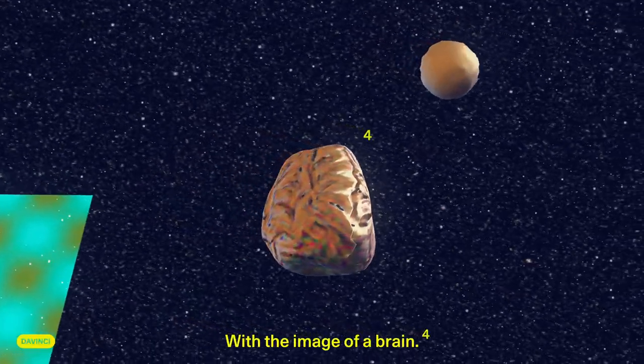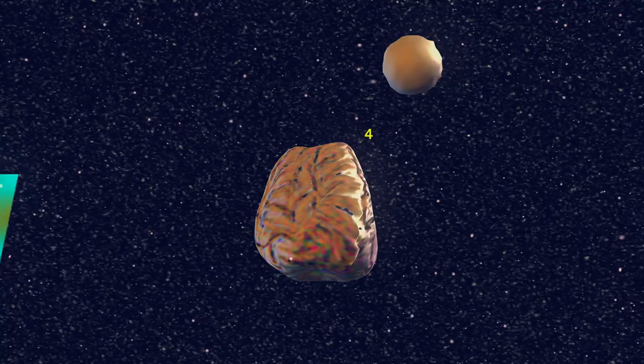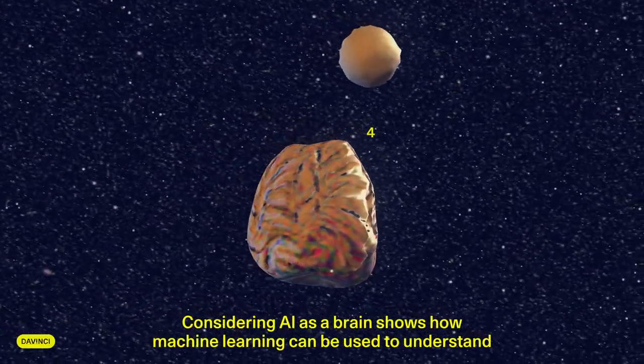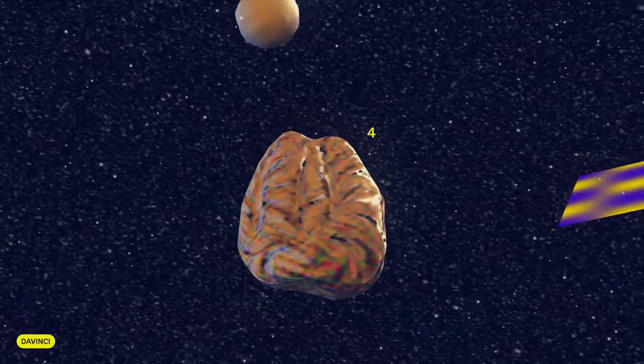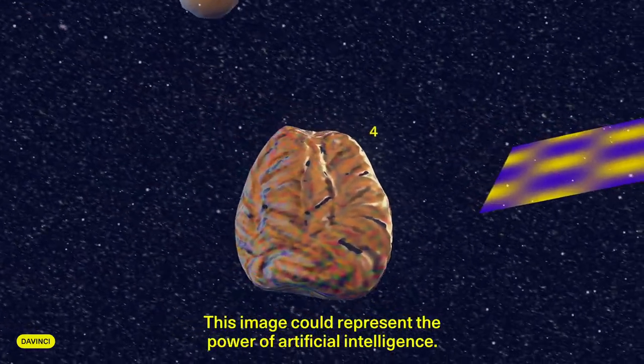With the image of a brain. Why? Considering AI as a brain shows how machine learning can be used to understand and analyze data more quickly than humans. This image could represent the power of artificial intelligence.